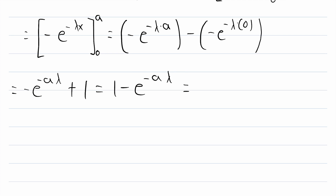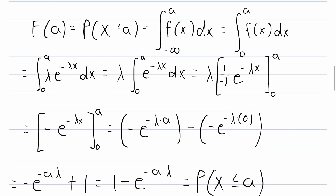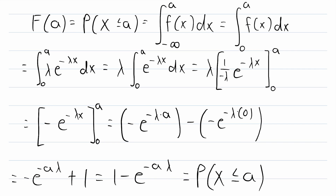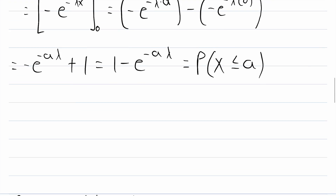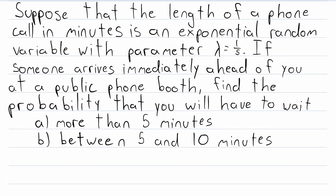For an exponential random variable, F(a) = 1 minus e to the negative a lambda is the probability that the random variable is less than or equal to a — quite handy. It's easy enough to do the integral to figure this out in any given problem, but since it's so common, I definitely recommend memorizing it. Now let's go ahead and do an actual example.